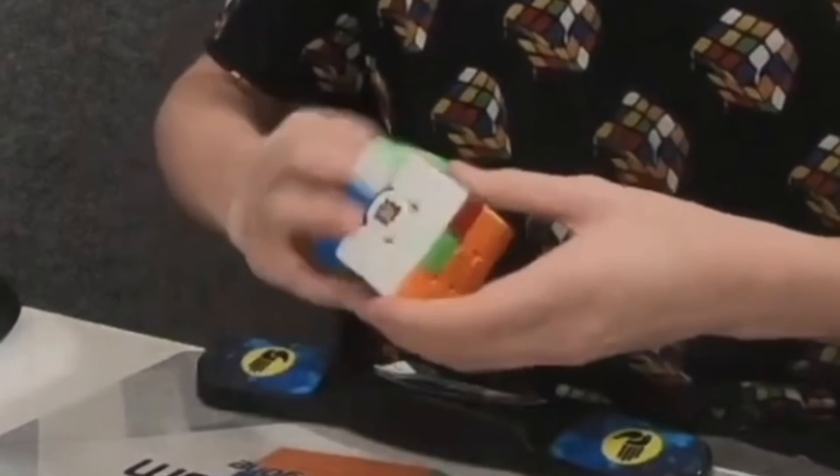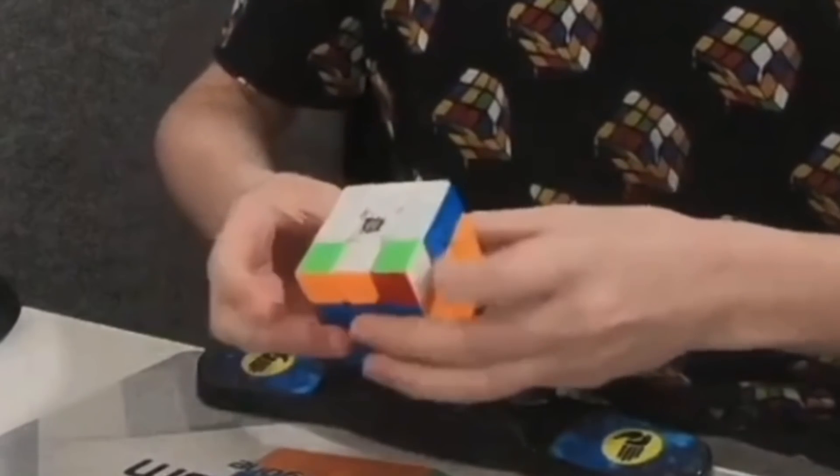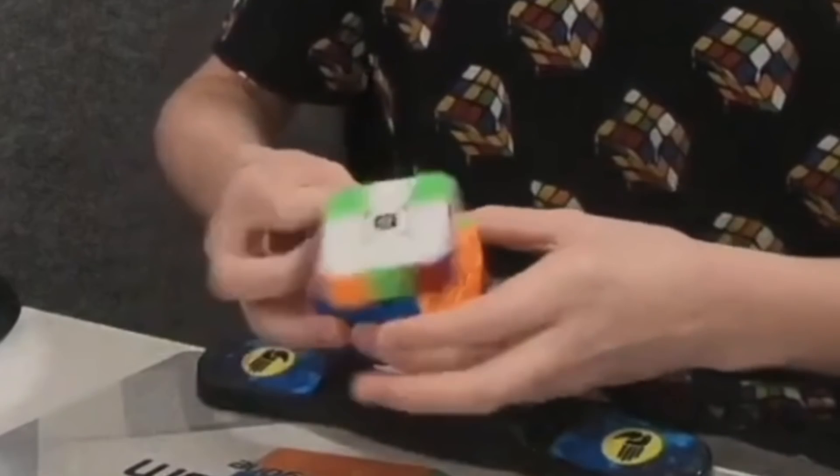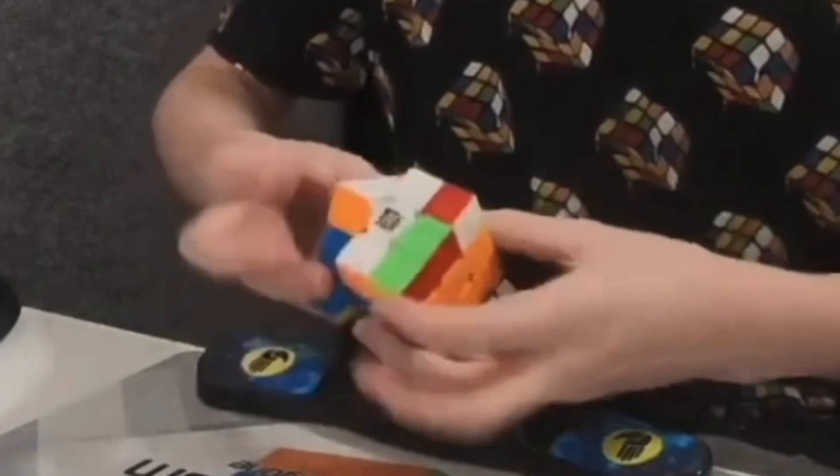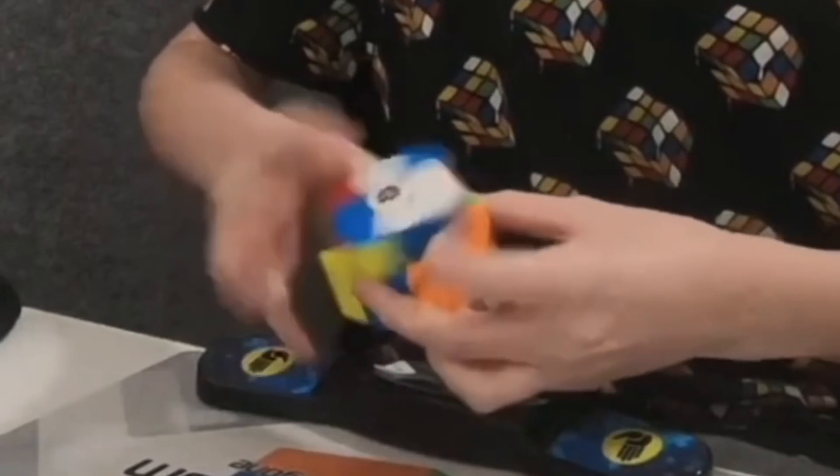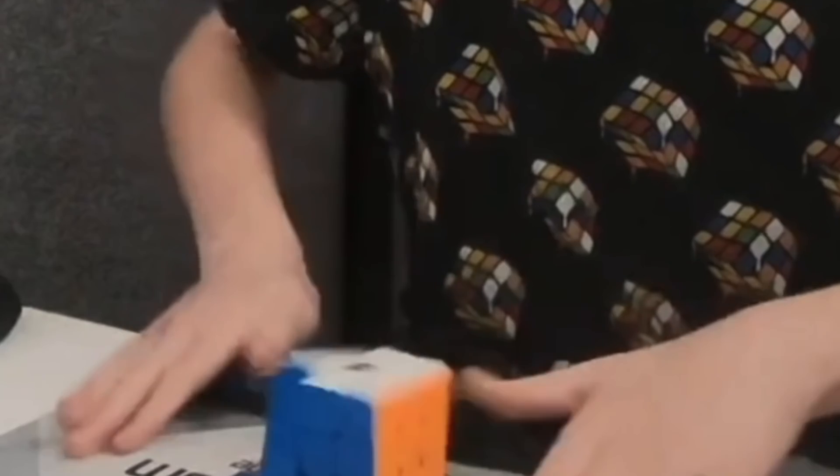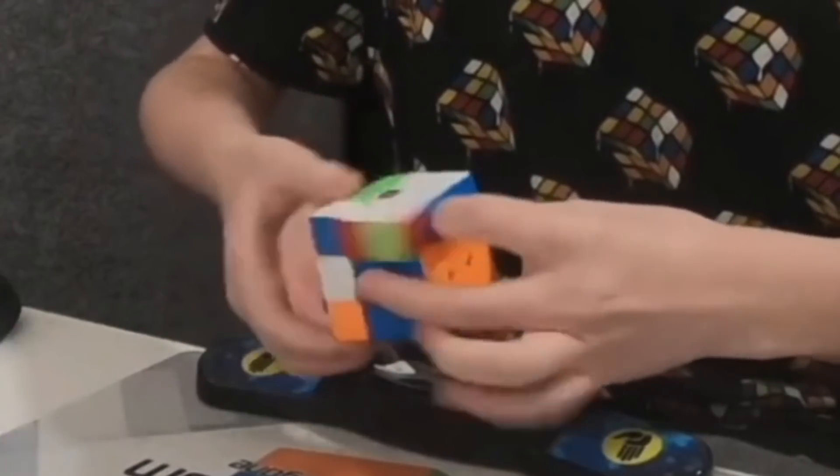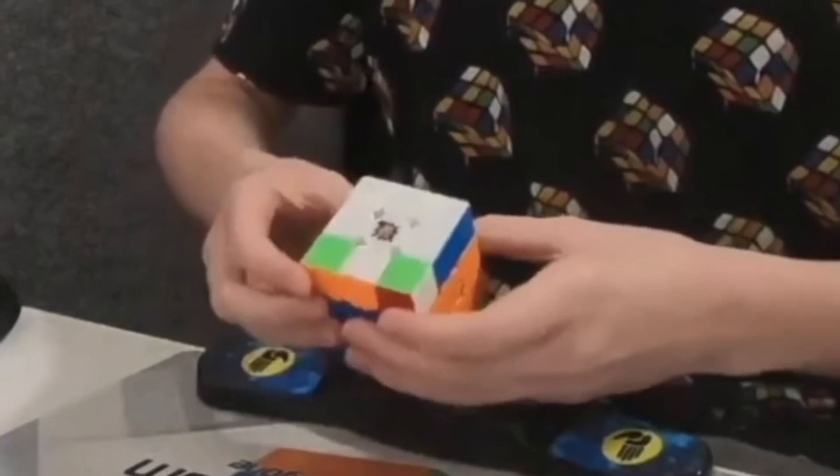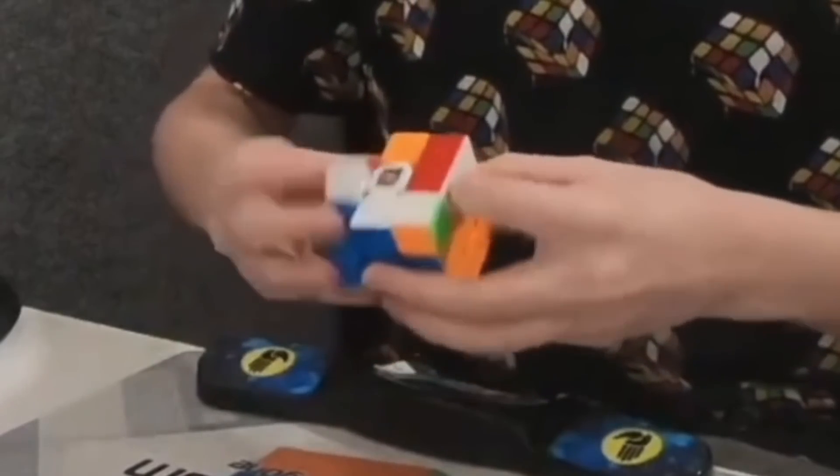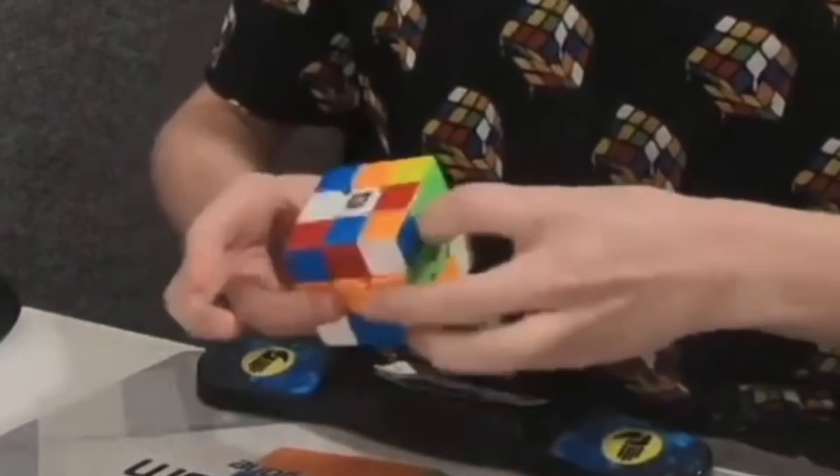And then at this point, just immediately, the last layer, and this is, again, just algorithmic. Yeah. We've practiced this a million times. So going back to the beginning of the solve, I think it's really interesting to analyze the execution of those first few moves.